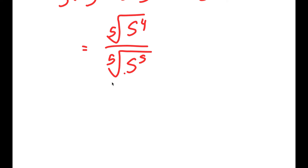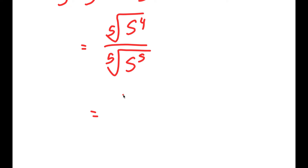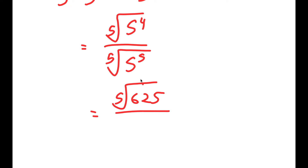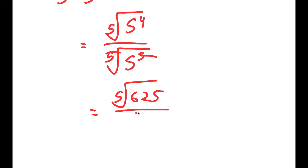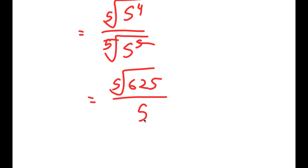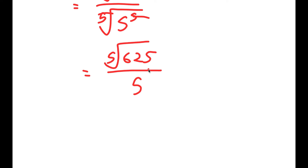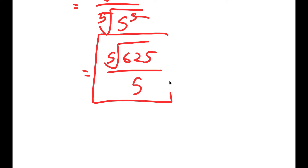Now, 5 to the power of 4 is 625, so I get the fifth root of 625 over the fifth root of 5 to the power of 5, which is just 5. So this is my answer.